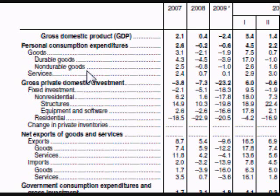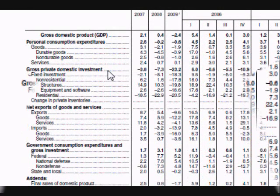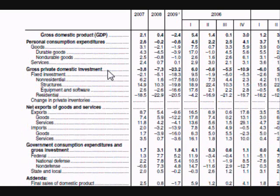Non-durable goods are goods that last less than three years — for instance, food, clothing, and shoes. This section tends to remain more stable during expansions and recessions in the economy. Services make up about 60% of consumption, whereas goods only make up about 40%. The US is often called a service economy.